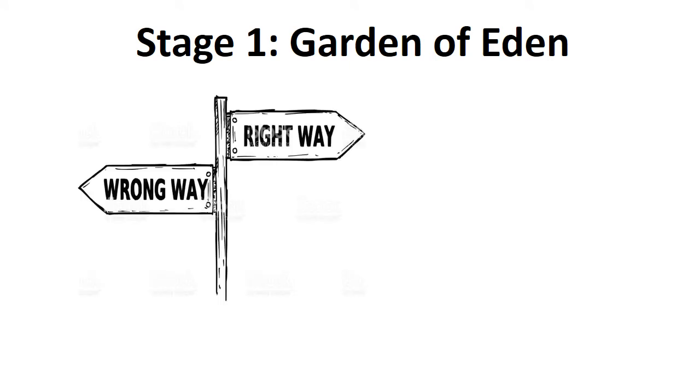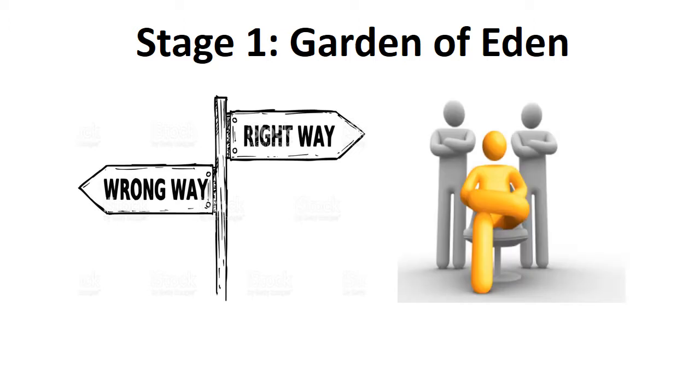People in the Garden of Eden stage of thinking tend to see the world in terms of black and white, right and wrong. Their authorities determine what's right and what to believe. Just like in the famous biblical Garden of Eden, knowledge is absolute, unchanging, and the sole position of authorities.